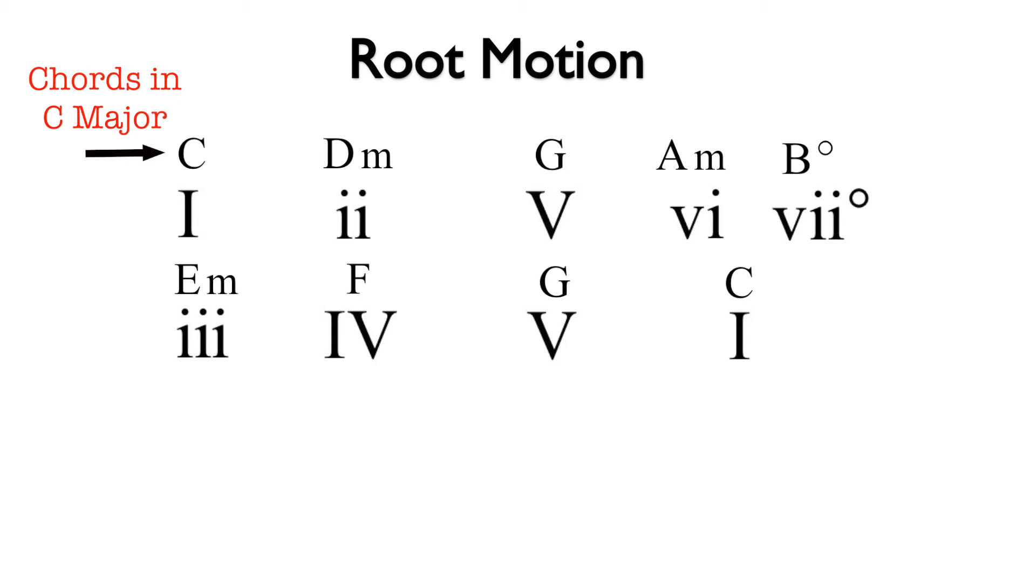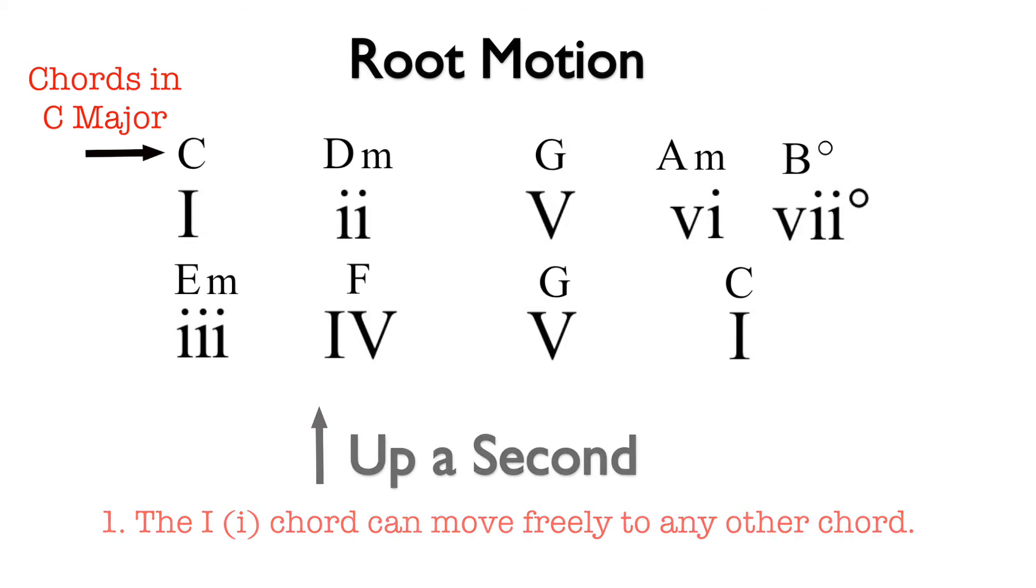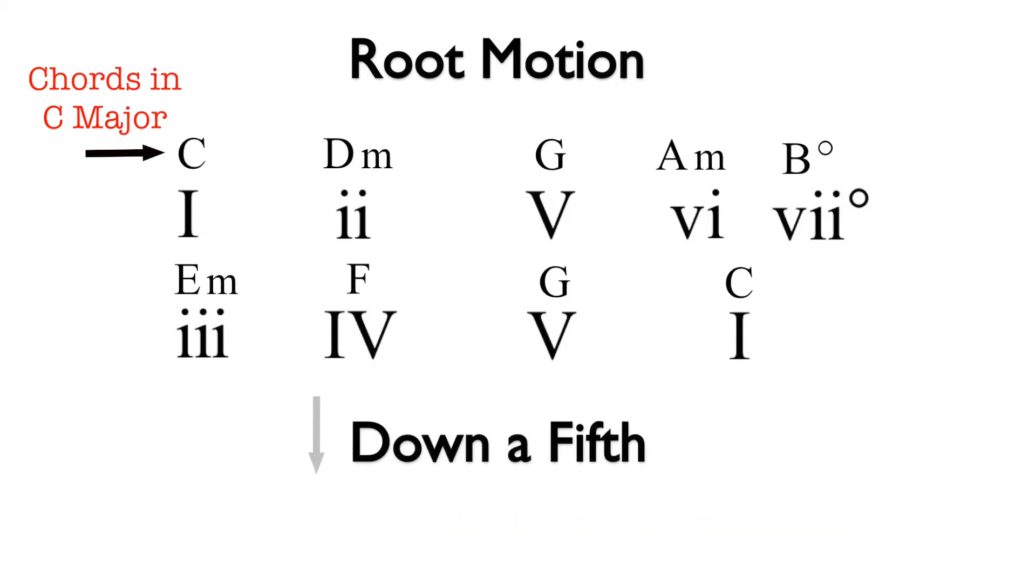One to two works since it is up a second root motion. In addition, we could go anywhere from one. Two to five is down a fifth root motion, and five to six and six to seven diminished are up a second root motion. So far all of the chord motions have fit the parameters of strong root motion.